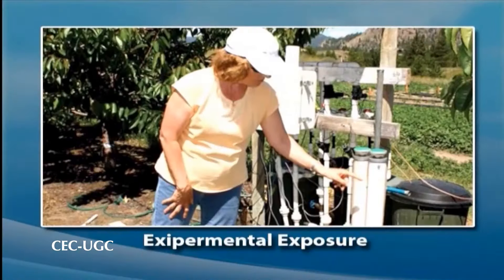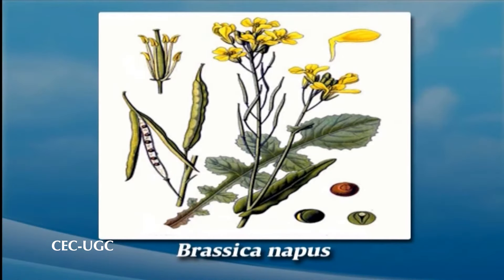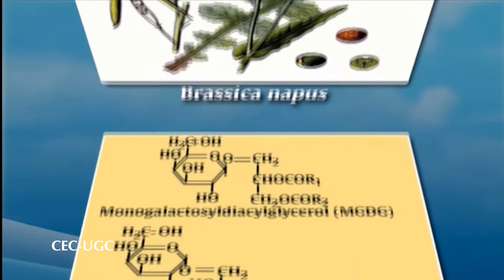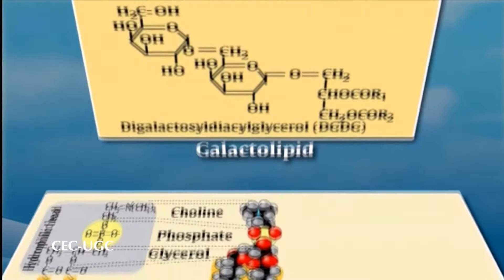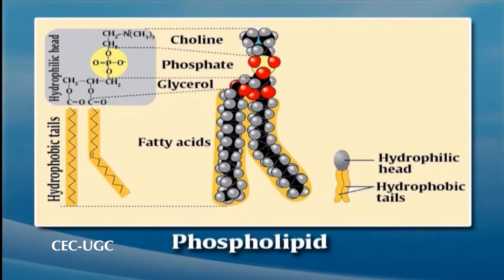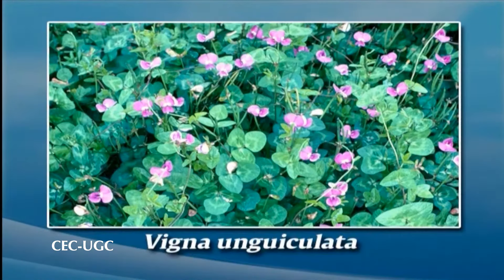Experimental exposure of plants to water stress has been found to provoke considerable changes in lipid metabolism, for instance in Brassica napus. Increasing degradation of lipids such as galacto- and phospholipids has been found to occur, for example in Vigna unguiculata. The stimulation of lipolytic activities has been found to be greater in drought-sensitive than in drought-tolerant varieties.